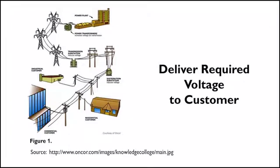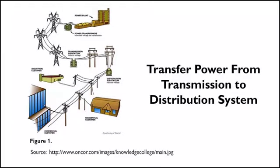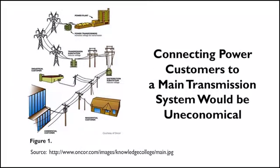The distribution substation essentially transfers power from the transmission system to the distribution system of a particular area. Typically, it's not economical to connect power customers directly to a main transmission system because of the high voltage level, so this is accomplished through a substation lowering voltage to distribution level.